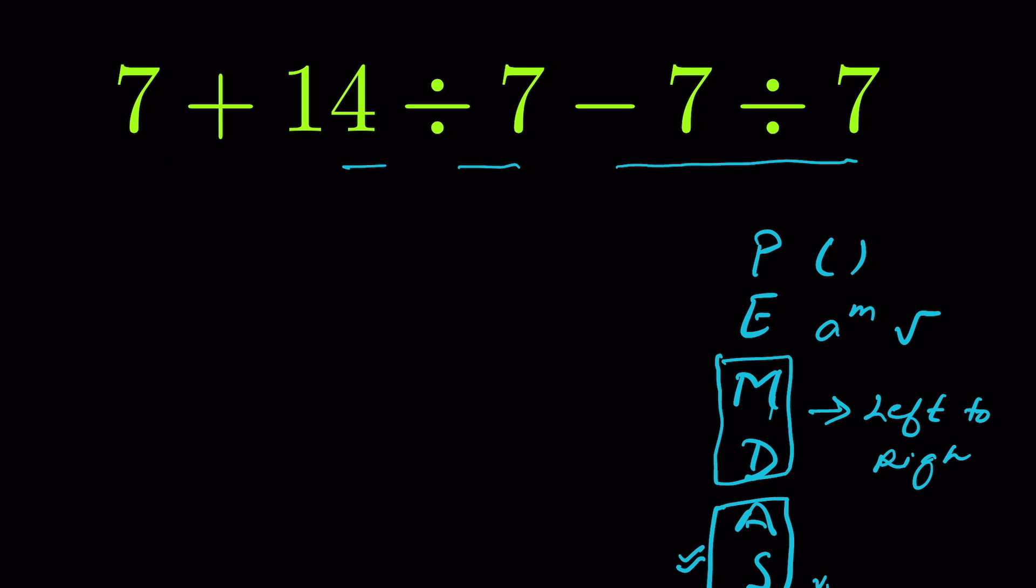7 plus - now this is 14 divided by 7. Division comes before addition or subtraction. 14 divided by 7 will be 2, then minus. Now this operation of division